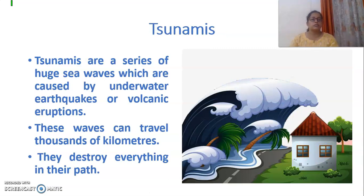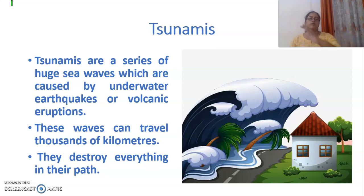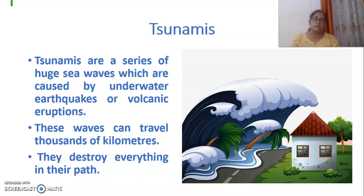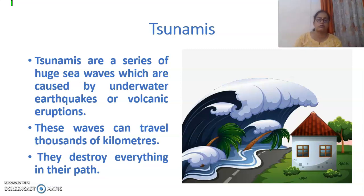Now, tsunamis. Tsunamis are a series of huge sea waves. Whenever there is a tsunami, a lot of sea waves occur because of underwater earthquakes as well as volcanic eruptions. Generally, a tsunami comes due to an earthquake or volcanic eruptions. Do you know, children? The waves of a tsunami can travel thousands of kilometers, so even distant regions can be affected.